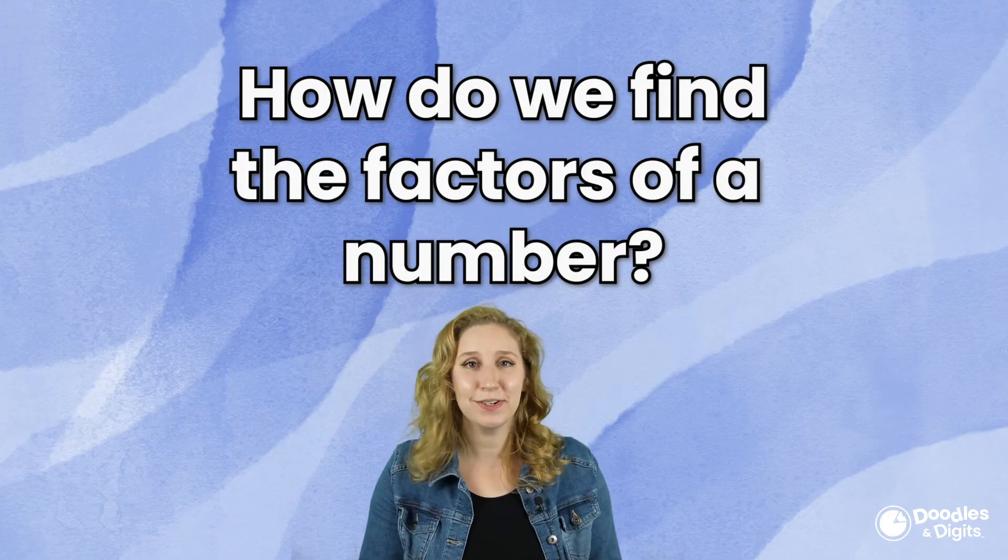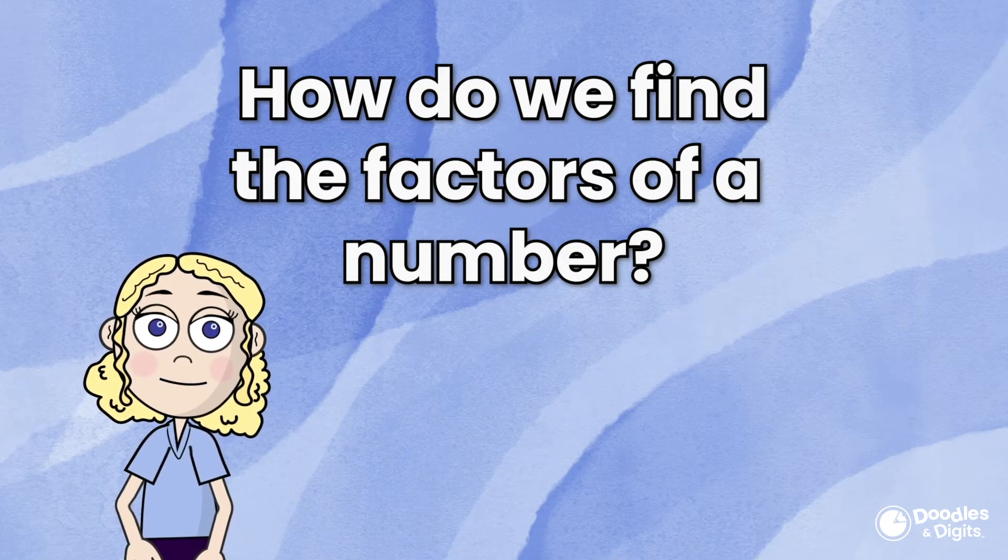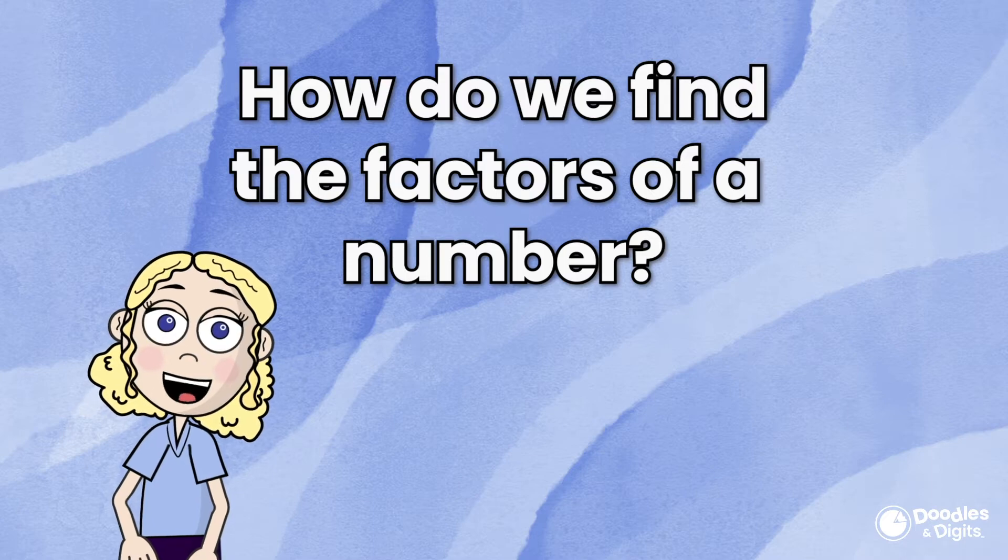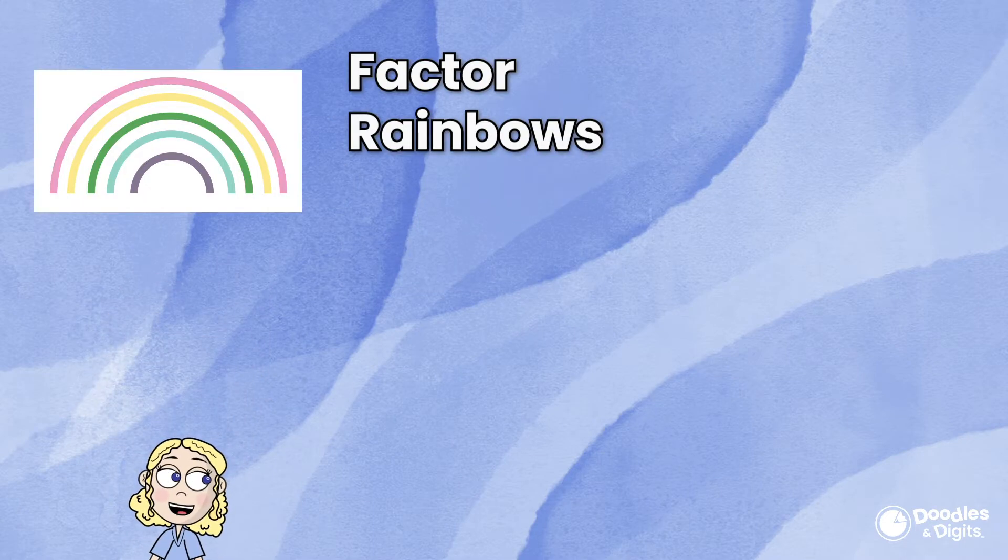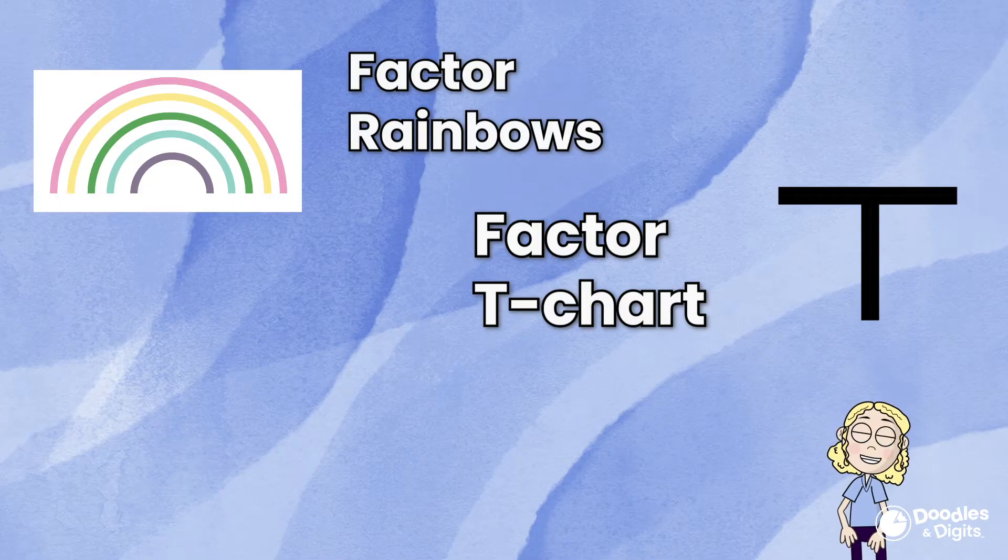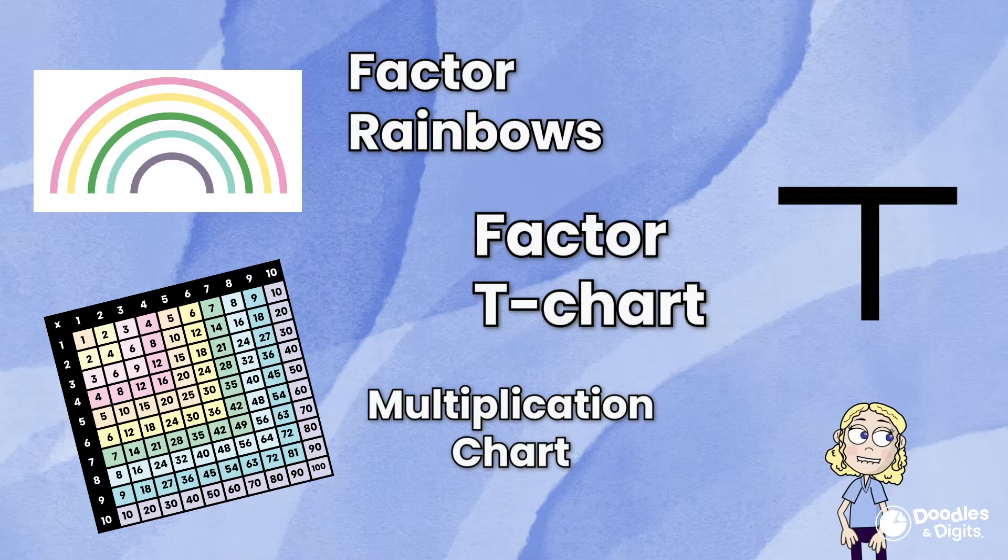How do we find the factors of a number? There are a few different ways that we can find factors of a number. The three ways that we will go over today are using factor rainbows, using a factor t-chart, and using tools like a multiplication chart. Try to find a strategy that works best for you.